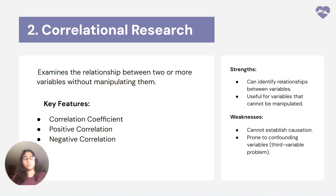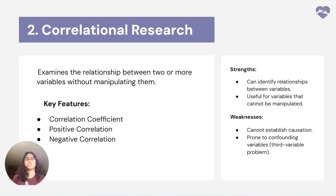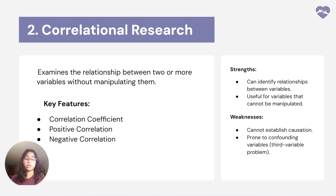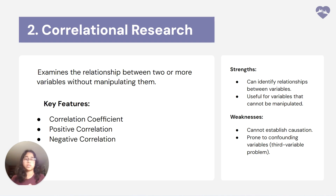The strengths of using the correlational method are that you can identify the relationship between variables, as shown in the example, and it's also useful for variables that you cannot manipulate. The weaknesses are that you cannot establish causation since you're not controlling the variables, and this method can also be prone to confounding variables.